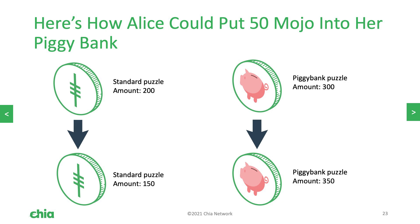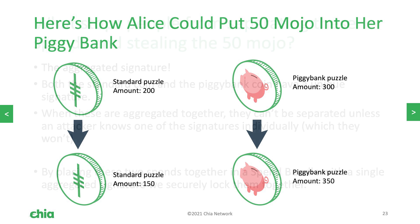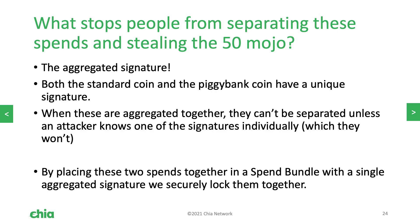This opens up some cool tricks. Here's an example of how Alice could put 50 mojo into her piggy bank coin. Let's suppose she has a standard puzzle coin with amount 200 and the piggy bank coin with amount 300. She could spend the standard puzzle coin and create a coin with 150, so there is 50 mojo now floating around in the ether to be claimed. And with her piggy bank coin, she could spend that and list the new amount as 350. This would be valid because inside of that spend bundle, the amounts add up. You may be wondering if having 50 mojo floating around is dangerous, but remember we have an aggregated signature that staples these transactions together. The aggregated signature cannot be separated unless you know one of the individual signatures that composes it. Tricks like this with internal spend bundle accounting and aggregate signatures enable a lot of really powerful things in the Chia ecosystem.